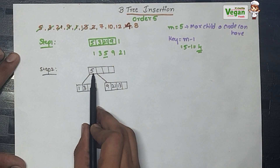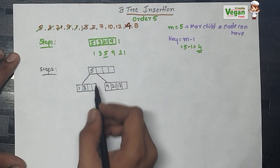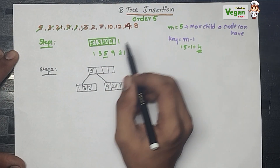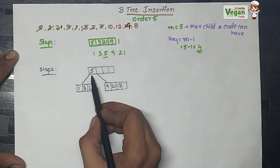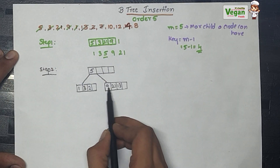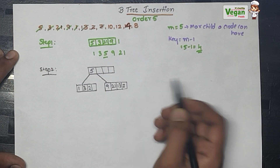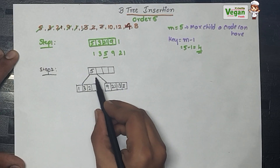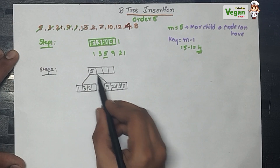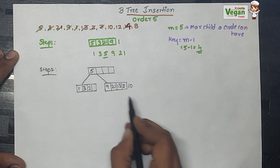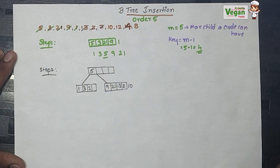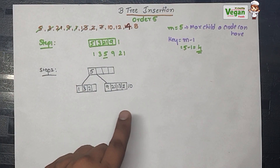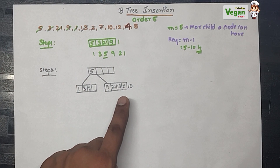I must insert 2. Since 2 is less than 5 it goes into the left node. Next insert 7 — greater than 5, so it goes into the right node. Next insert 10 — greater than 5, so 10 goes into the right node. But there is no space because the maximum key value is 4.